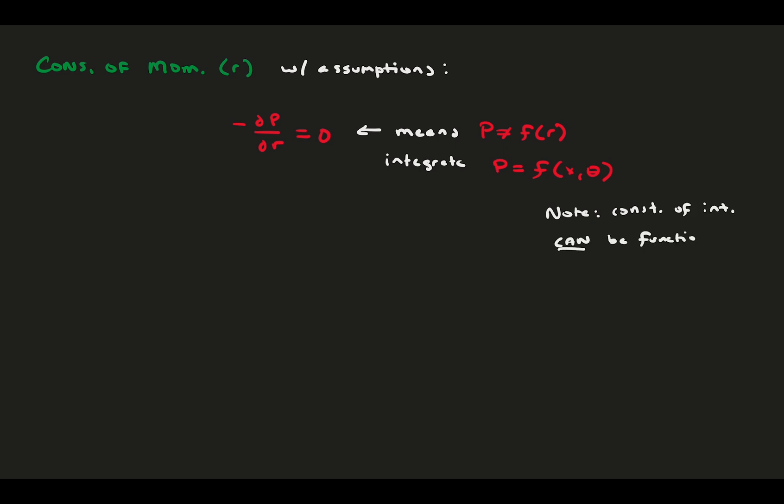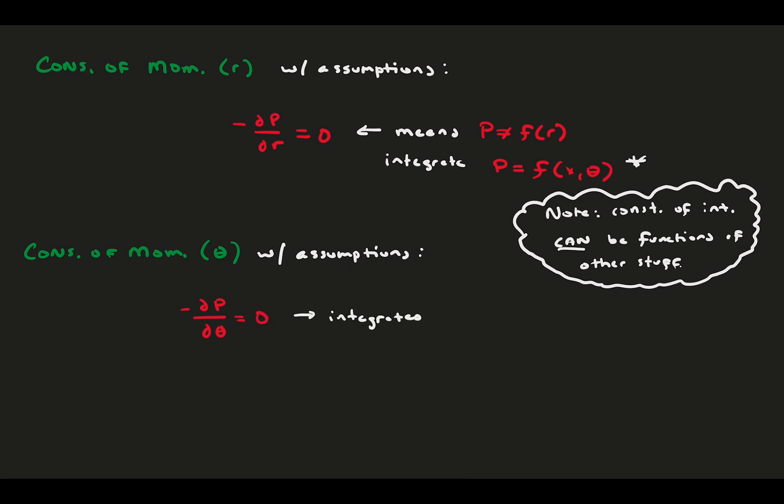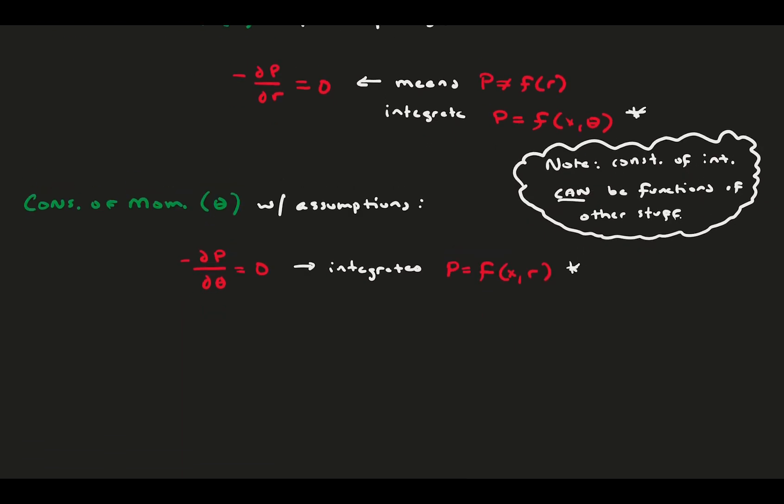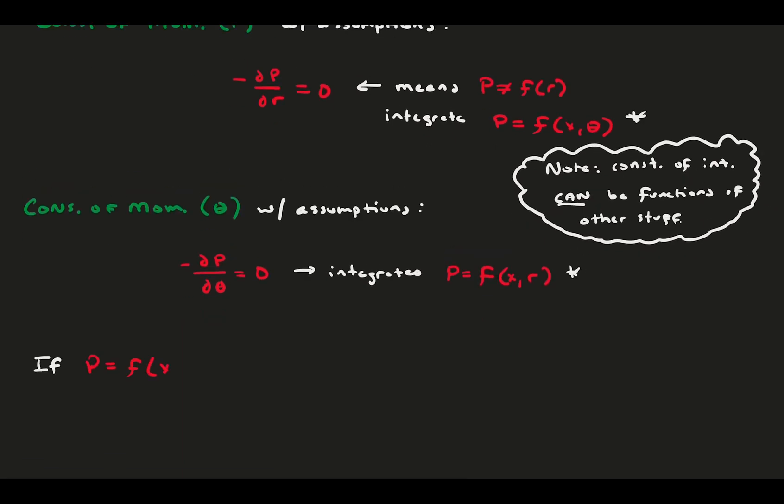Note that, when we integrate, the constants of integration can be functions of other variables in the problem. It merely means it is constant with respect to the variable that you use for integration. Similarly, the theta-momentum equation merely tells us that dp d theta is zero. Integrating this tells us that p must be a function of only x and r. If we combine the two expressions for pressure, one from the r-momentum and one from the theta-momentum, we can conclude that the pressure must only be a function of x, the streamwise direction.